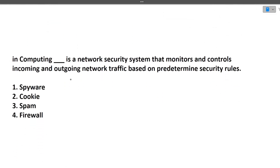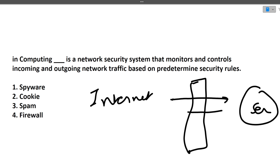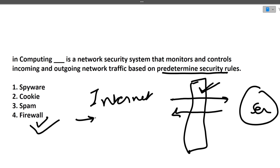Next question: a network security system that monitors and controls incoming and outgoing network traffic based on pre-determined security rules is called what? Imagine the internet on one side and servers on the other — there is a component in between that monitors traffic going inside and outside based on pre-determined security rules. That component is a firewall.